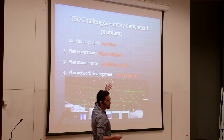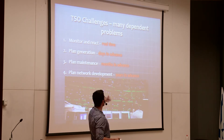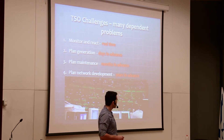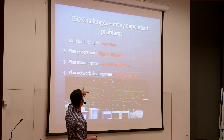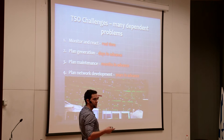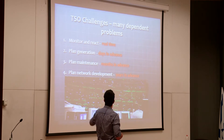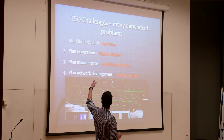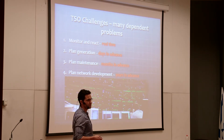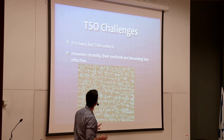Each of those problems is very complicated, and they're all interdependent. For example, if we want to expand the network — say, building a power plant or laying a line — we need to understand how it will affect future maintenance. That future maintenance is dependent on the daily process of planning generation. And when we plan generation, we need to understand how it reflects in real time. All of this should be considered years in advance.